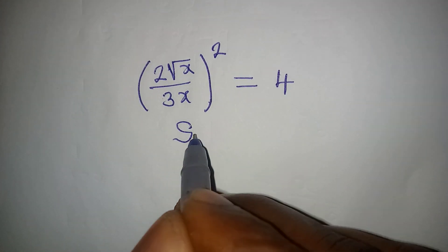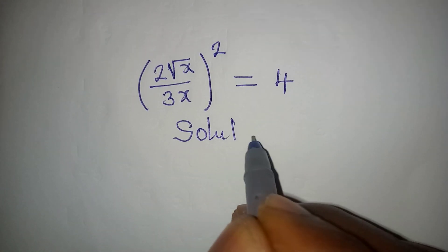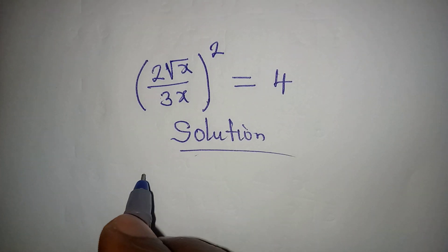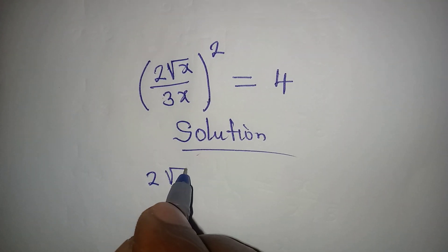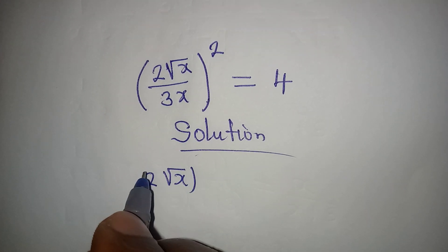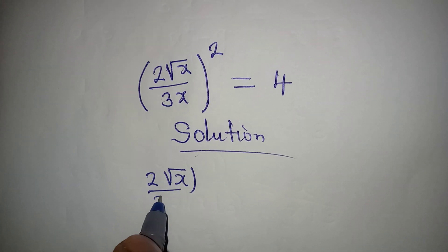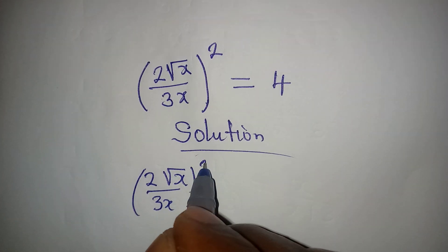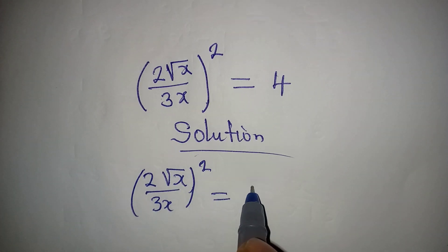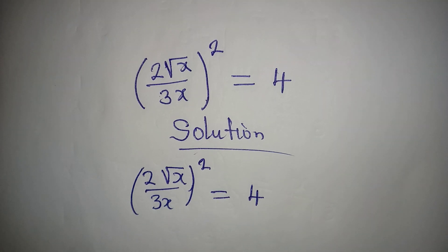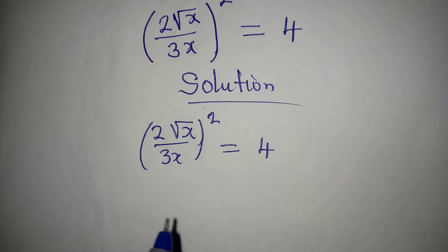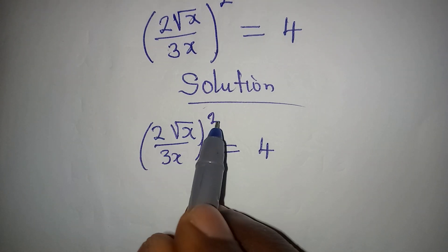Hello everyone, let's provide a solution to this problem. We have (2√x / 3x)² = 4. This is very simple. The first thing is, 2 to the power of 2 will give 4.